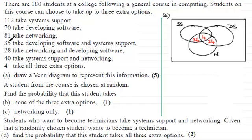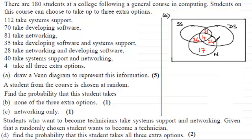This region comes from the 35 taking developing software and systems support. With 4 in the middle, that leaves 31 in the DS-and-SS-only intersection. Now for networking: all regions of the networking circle must add up to 81. Adding 36, 4, and 24 gives 64, so 81 minus 64 leaves us with 17 for networking only. Similarly, 70 take developing software: adding 31, 4, and 24 gives 59, and 70 minus 59 gives us 11.